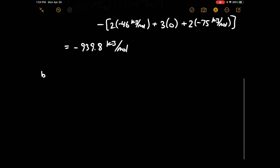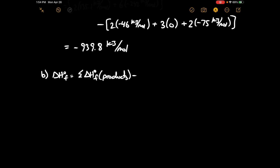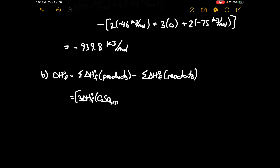For Part B, delta H°f is equal to the sum of delta H°f of the products minus the sum of delta H°f of the reactants. On the product side we have 3 delta H°f of calcium sulfate solid plus 2 delta H°f of H₃PO₄ liquid.